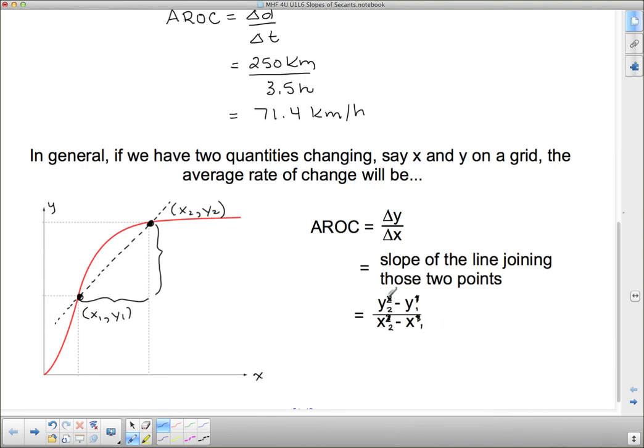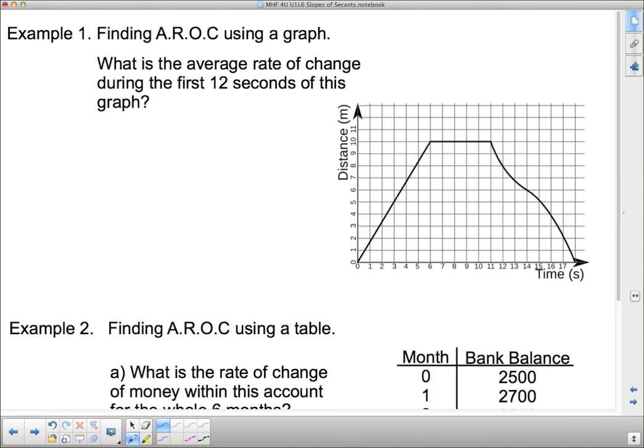So we're finding the slope of the secant. We're taking the value of the function, the y value of the function, and finding the difference between the beginning and the end point, and then dividing it by the difference between the beginning and the end point for the x's. So let's have a look at a couple of different situations.